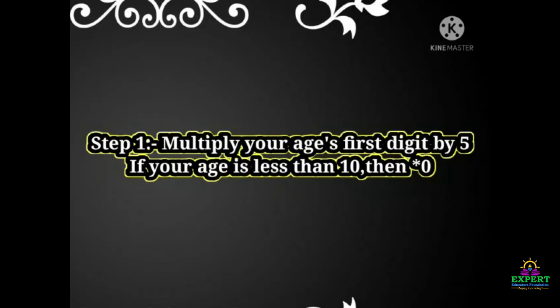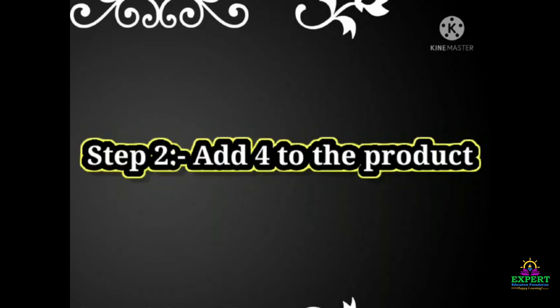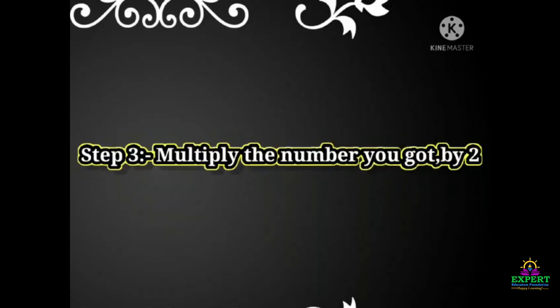Multiply your age digit by 5. If your age is less than 10, then multiply it by 0. Step 2: Add 4 to the product. Step 3: Multiply the number you got by 2.